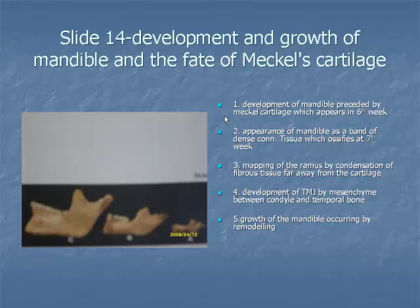Item 6: Although the cartilage does not participate in the formation of bone of the mandible, its remnants may still remain at the symphysis as nodules of cartilage until birth. Also, the most dorsal part of the cartilage ossifies to form the ear ossicles — that is, the malleus and incus. Behind the body of mandible, the perichondrium of Merkel's cartilage persists as the sphenomandibular and sphenomalleolar ligaments.